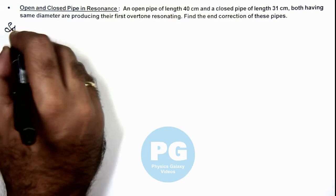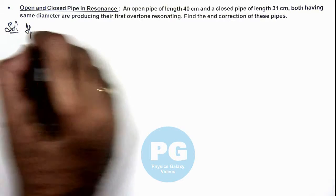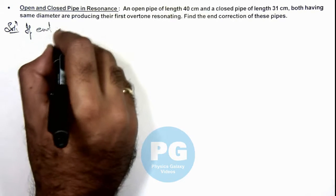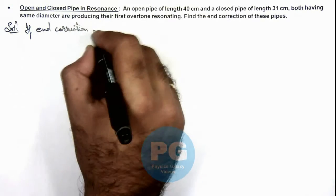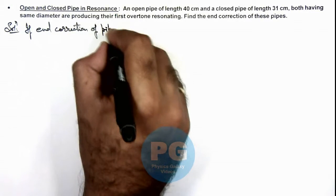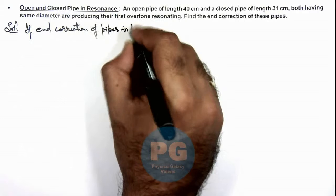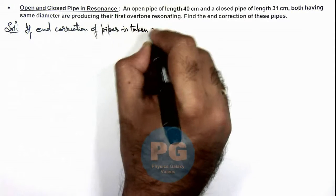Here we can write, if end correction of pipes is taken as e.